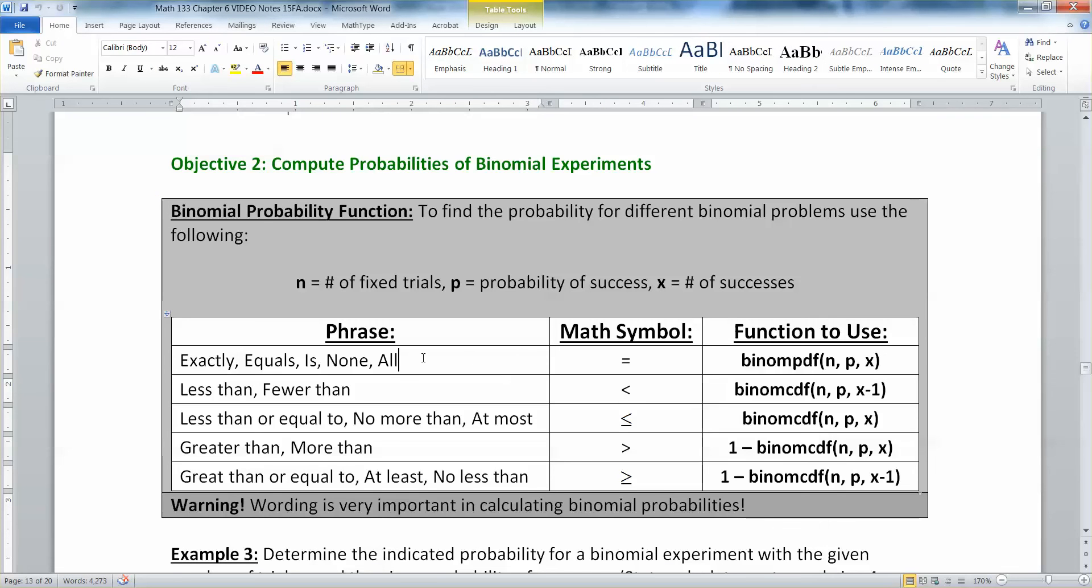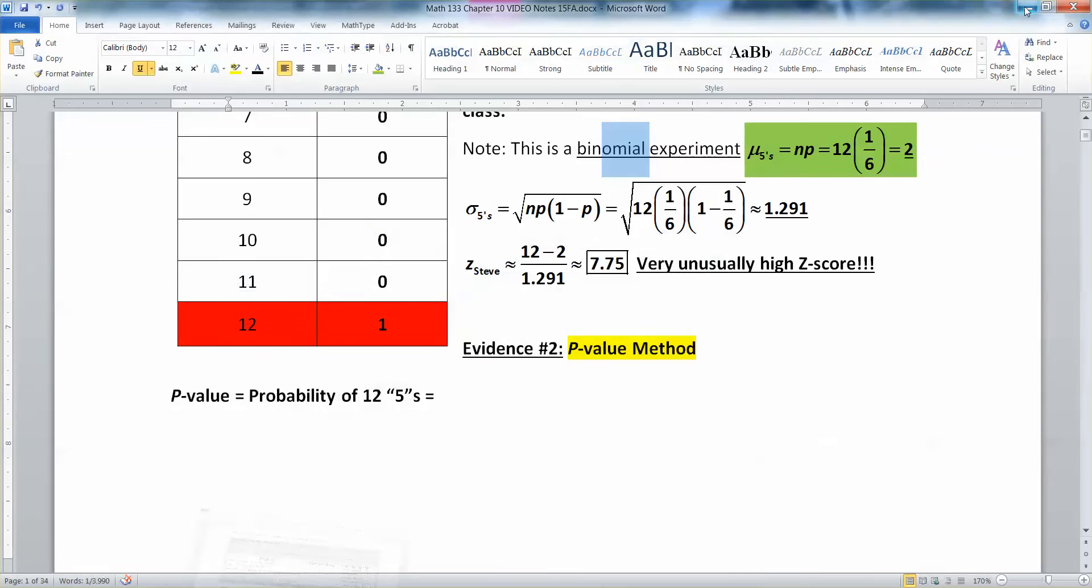In section 6-2, we learned how to find binomial probabilities. And the probability of exactly 12, that's what we're looking for, is binome PDF n, p, x. n for us was 12, because we rolled 12 times. p was assumed to be 1 sixth, because there's one side out of 6 that is a 5. And then x is 12. So let me do this. So I want to find binomial PDF 12, 1 sixth, 12.